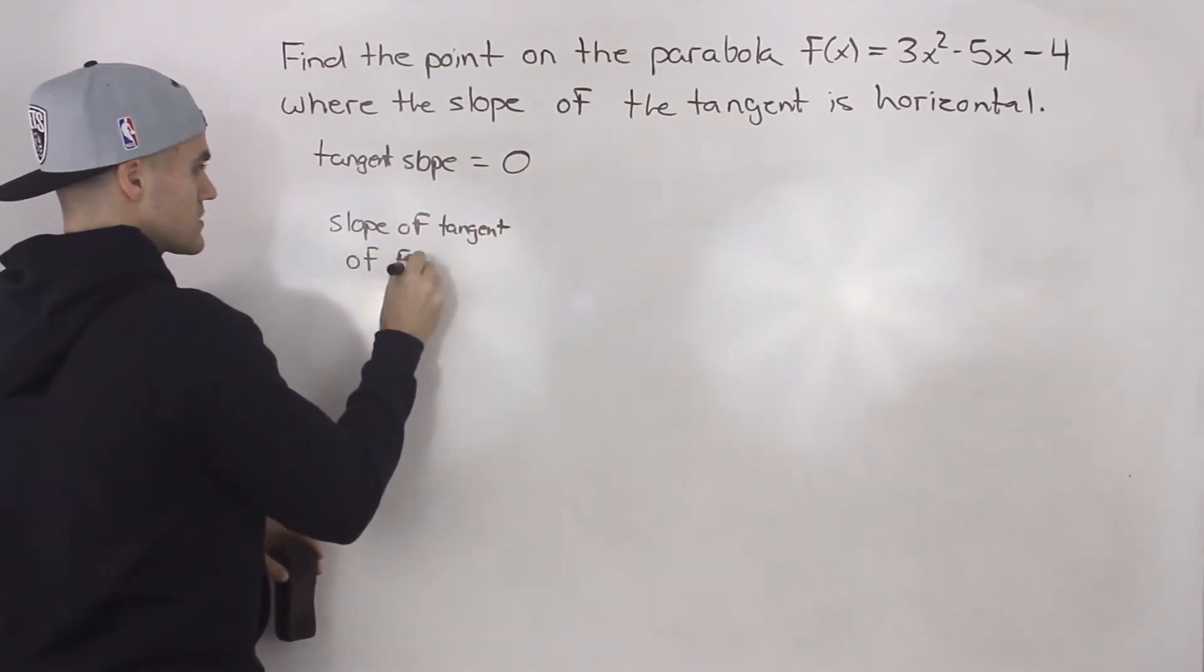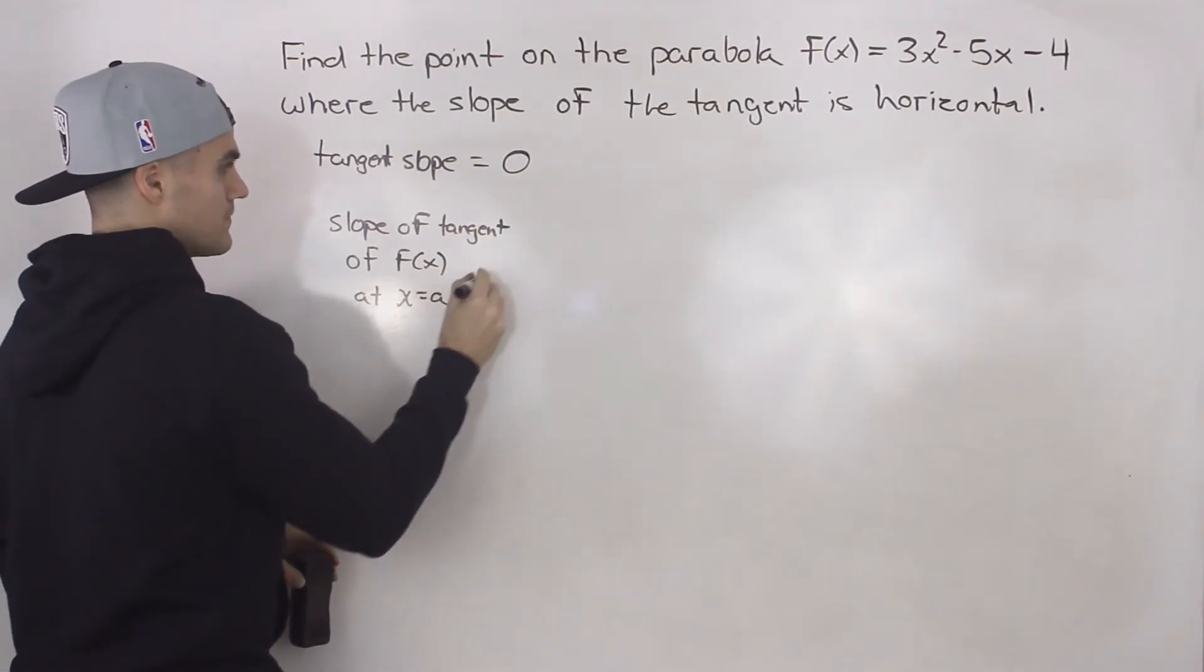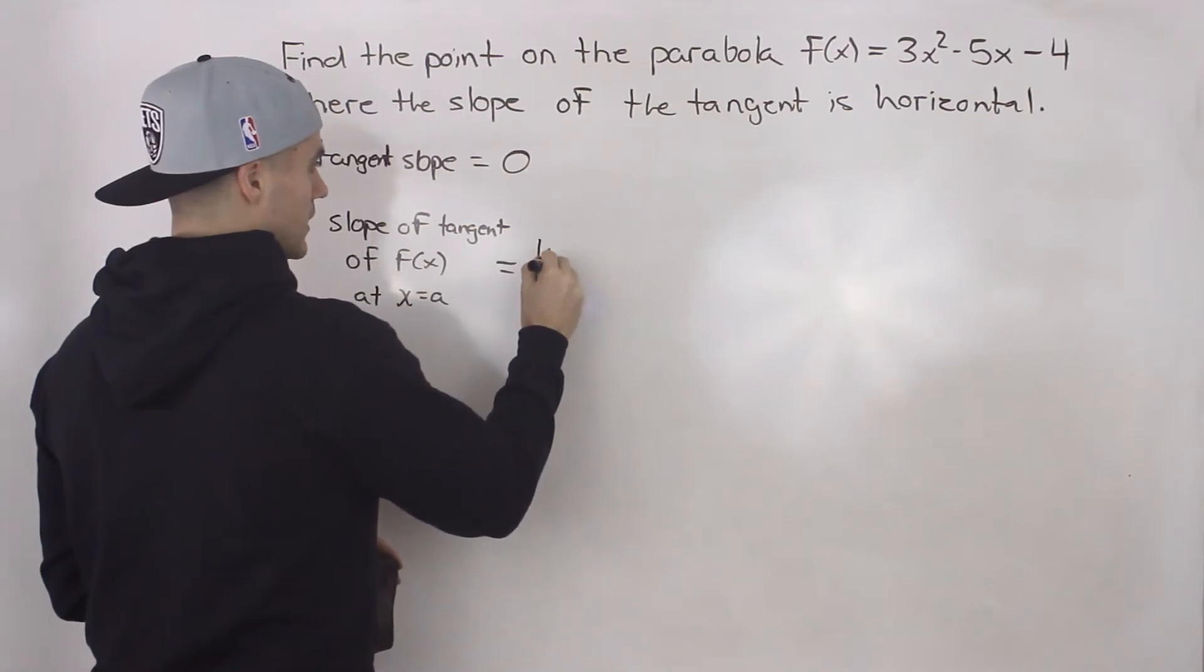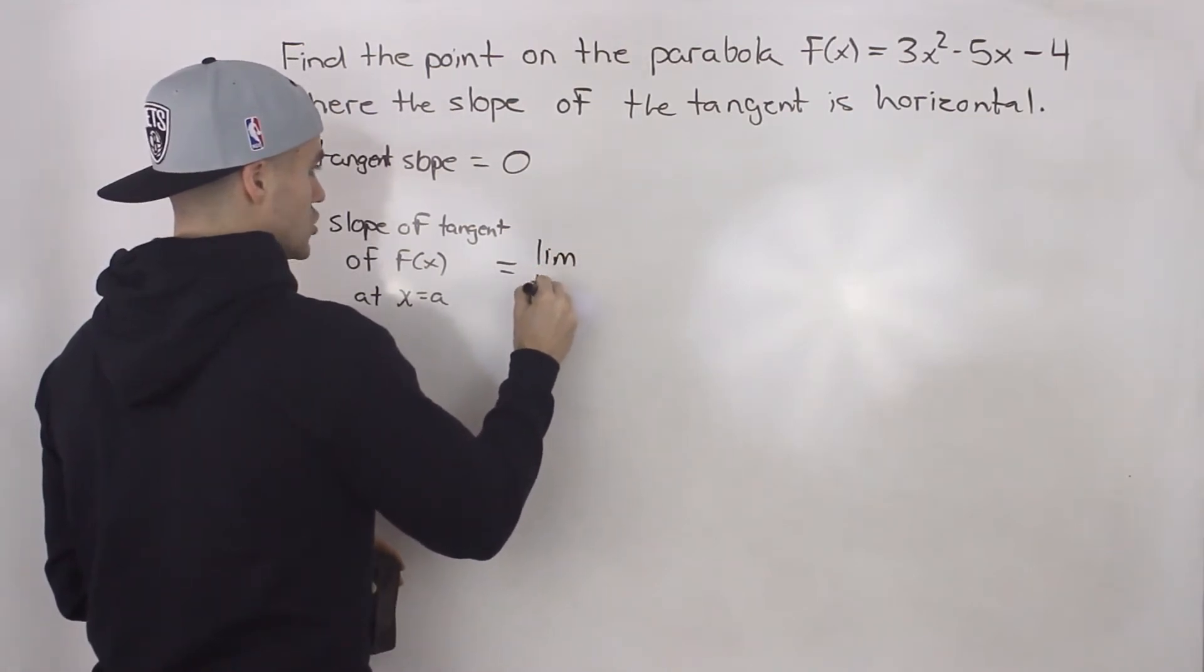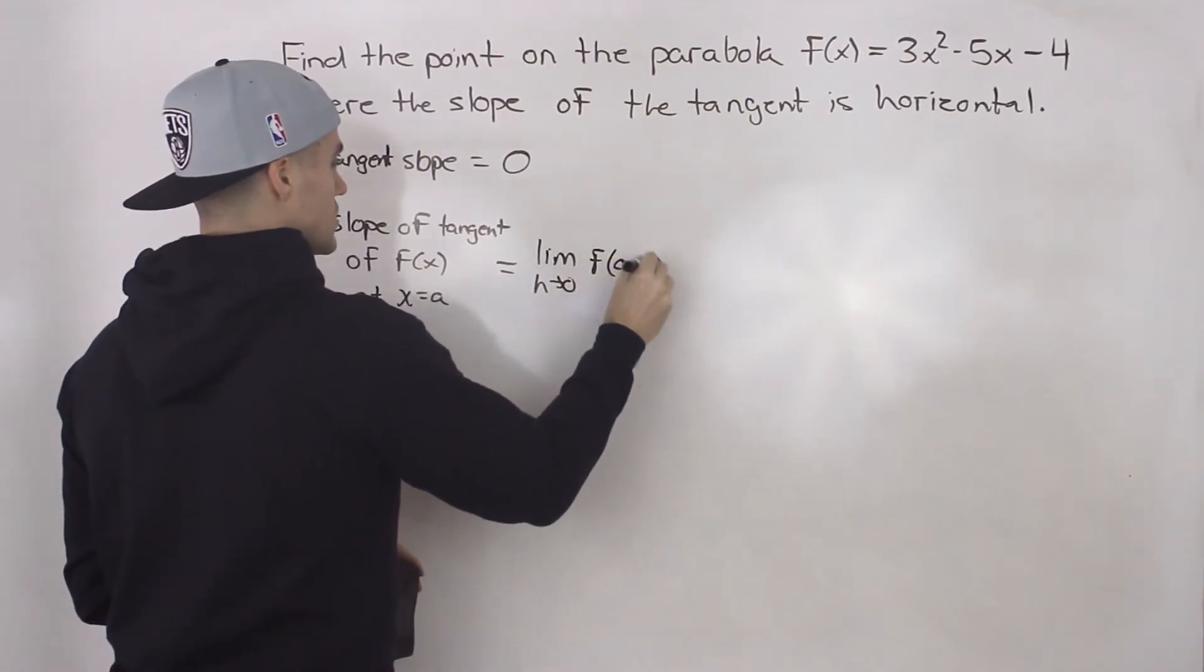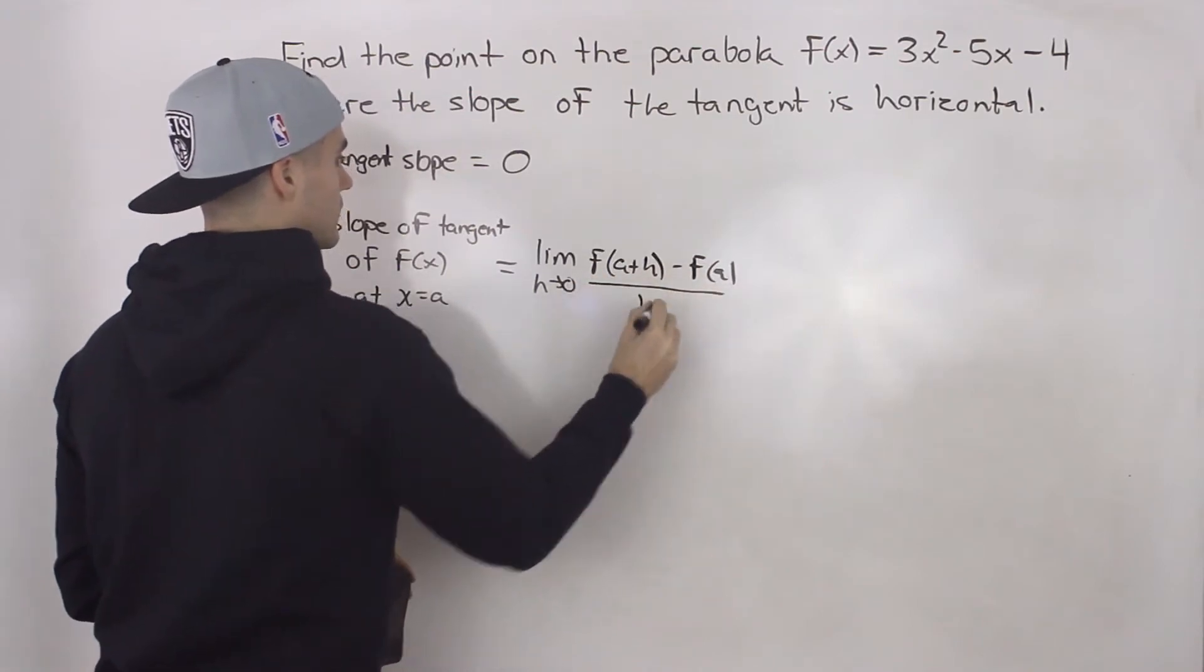of f(x) at some x value a, we know in general it's going to be the limit as h approaches 0 of [f(a + h) - f(a)] / h.